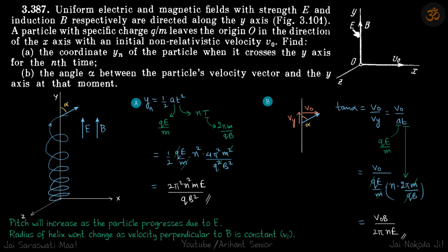The electric field can only change the velocity in y direction but in xz plane the velocity will remain v0 because magnetic field will always act perpendicular to v0 all the time in xz field. So the radius of the helix will remain constant and time period is constant for a given magnetic field.